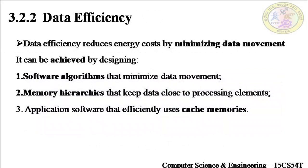When we talk about data efficiency, efficient data reduces energy costs by minimizing data movement. Minimizing data movement refers to the access to and fro from the main memory. Data and instructions are stored in the main memory, and when the CPU has to execute any process, it fetches data and instructions from memory, processes it, and puts the result back into main memory. This is exactly the movement that we need to minimize, and data efficiency basically deals with that.